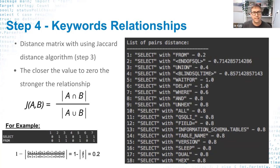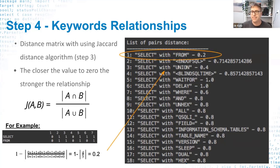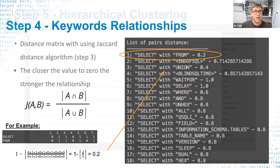Step 4 creates a numeric relationship between keywords using the Jaccard index algorithm — the intersection of two vectors divided by their union. For 'SELECT' and 'FROM': they co-appear in payloads two, three, five, and seven (intersection = 4), but the union is five because 'SELECT' also appears in payload six. Dividing gives 4/5, then we normalize to get 0.2. Values closer to zero indicate stronger similarity between keywords.